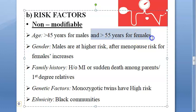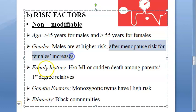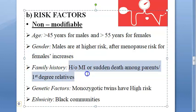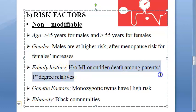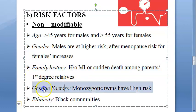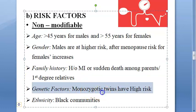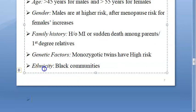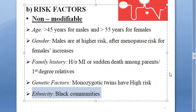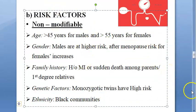Women are protected because of estrogen up till menopause, so they will not have the same risk of hypertension. Males are at higher risk, and after menopause, females' risk increases. Family history also matters — this person's mother had myocardial infarction, so a history of MI or sudden death among first-degree relatives is a family history risk factor. Genetic factors like monozygotic twins have high risk of hypertension, and ethnicity — Blacks reportedly have high risk.